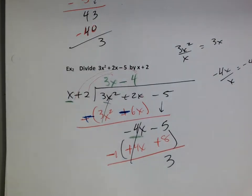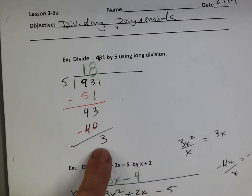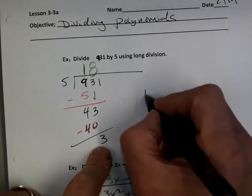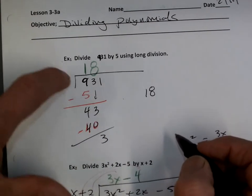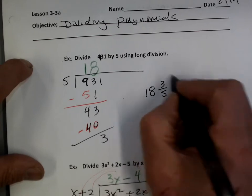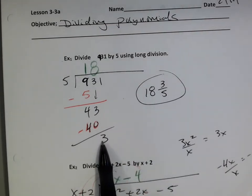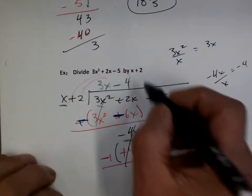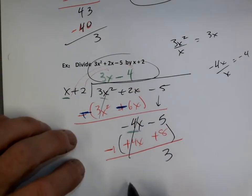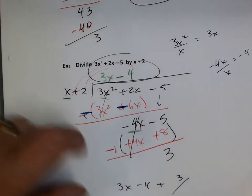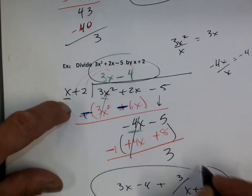We are not in 4th grade math. In 4th grade math you'd go remainder 3, but we're not going to do that. We're going to say the answer is 18 and 3 fifths — remember that from 6th grade math. I took the 3, which is my remainder, over the dividend. We'll do the same thing here. My answer is 3x minus 4 plus 3 over x plus 2.